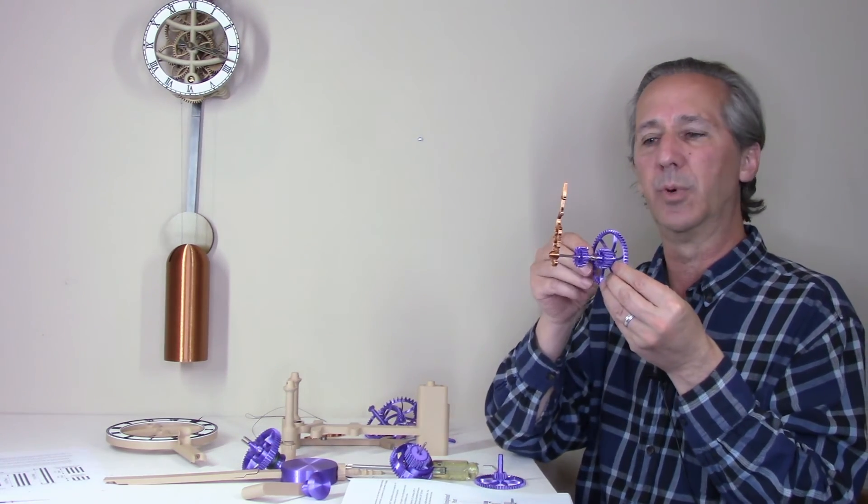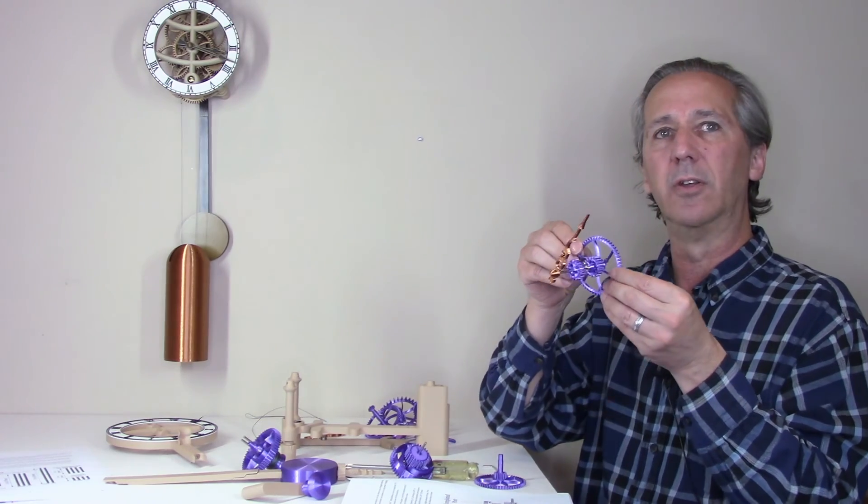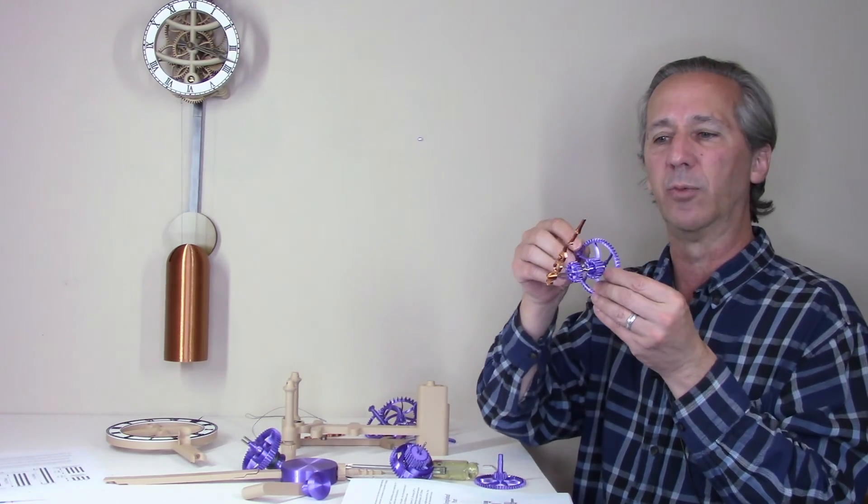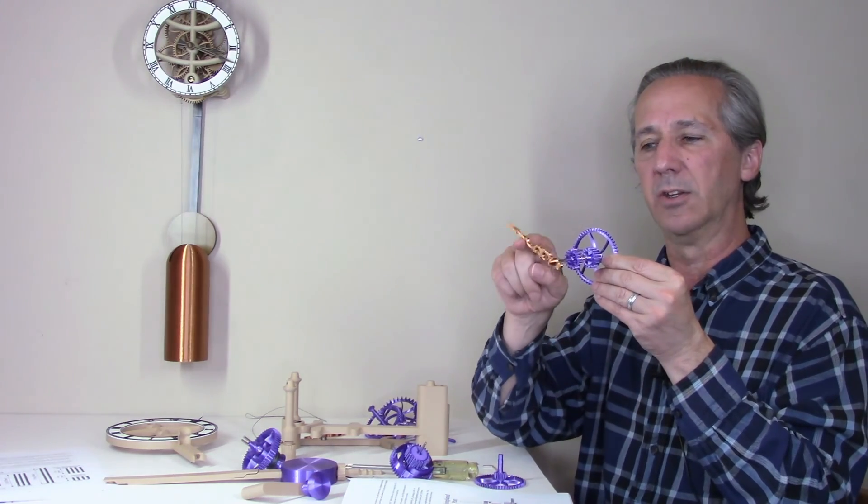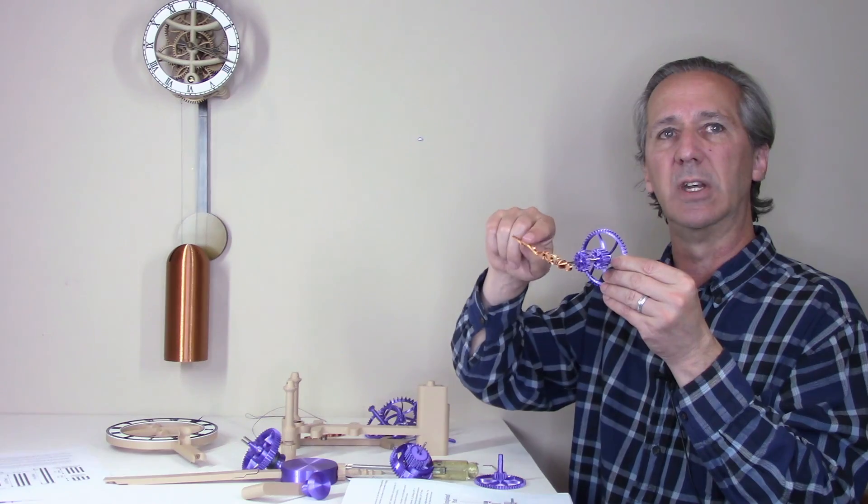The spring pushes everything together. So when the large gear rotates, everything else rotates with it. But the spring is weak enough that you can change the time by just pushing on the minute hand.